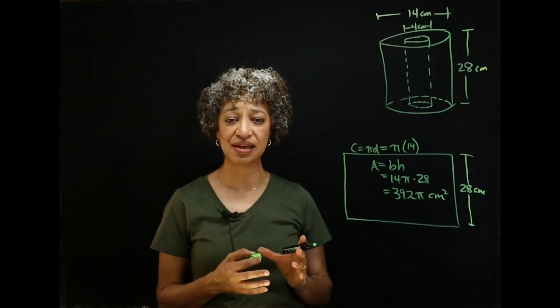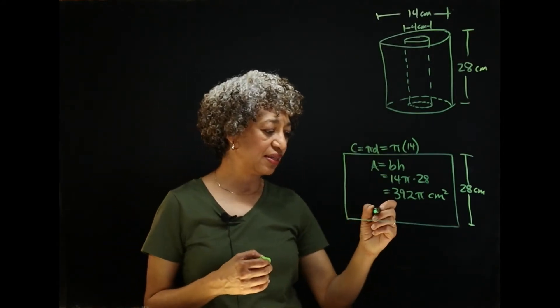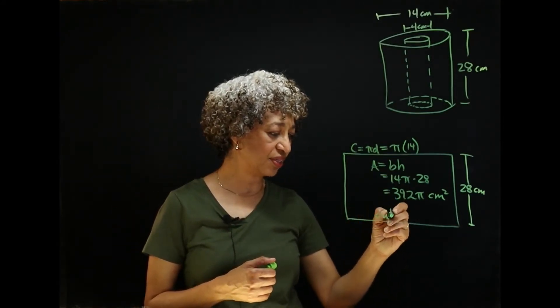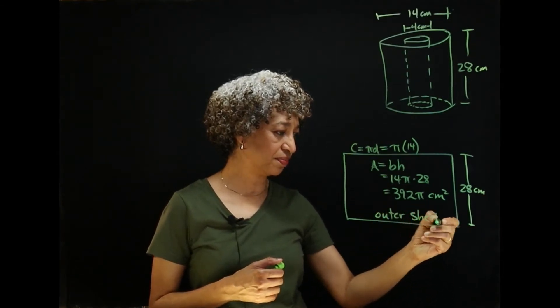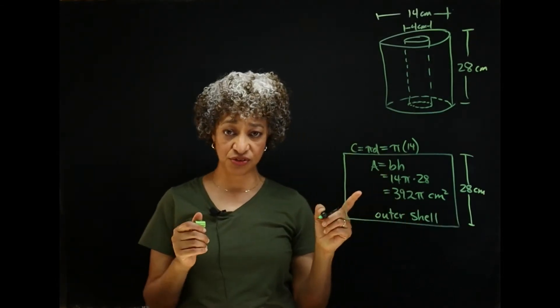Area is always expressed in square units. So, this is our outer shell. So, that's one surface.